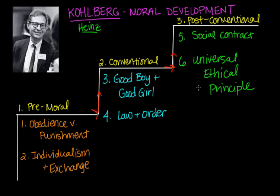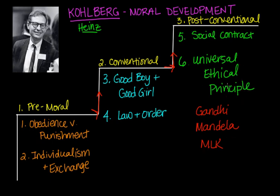Can you think of famous people in history who reached this stage? Gandhi was one — how many times was he put in prison? What about Nelson Mandela, or Martin Luther King? There are so many people who believed in the universal rights of equality for all people, even if it went against the law and order of their society at the time. They still upheld these principles and were prepared to pay the legal consequences — the restraints. They are the ones with the highest level of morality, according to Kohlberg.